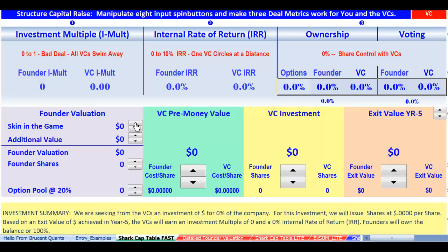There will just be eight numbers that we enter, and the first will be skin in the game — that's the cash that you've actually invested, you and your partners. The additional value will be things like management, intellectual property, perhaps some early sales.